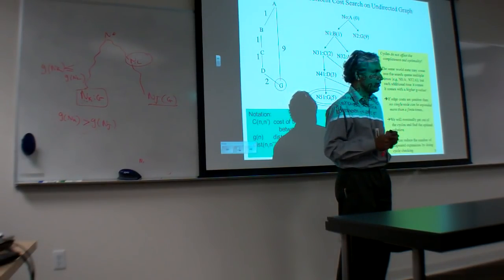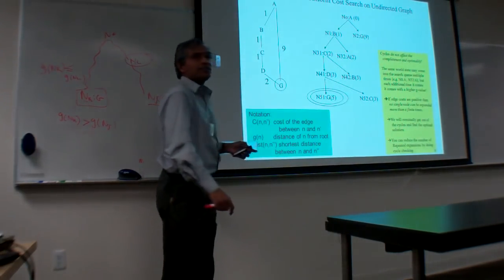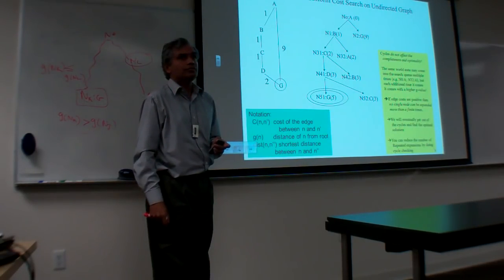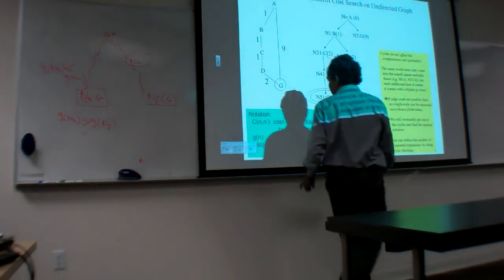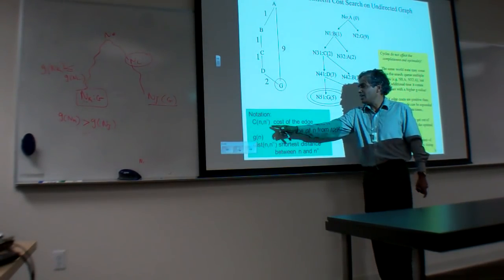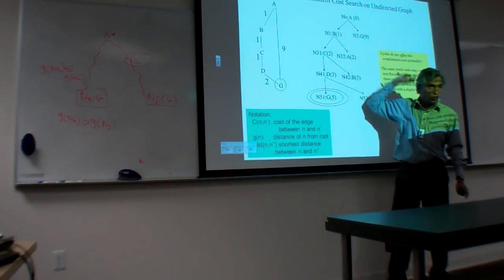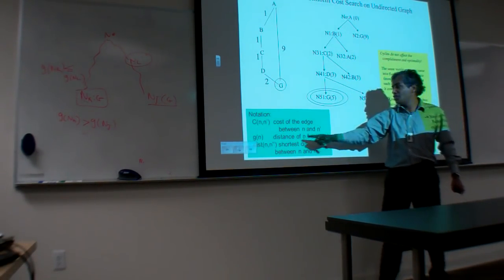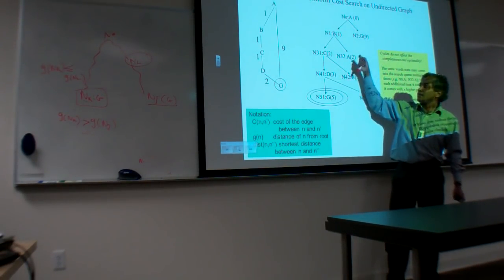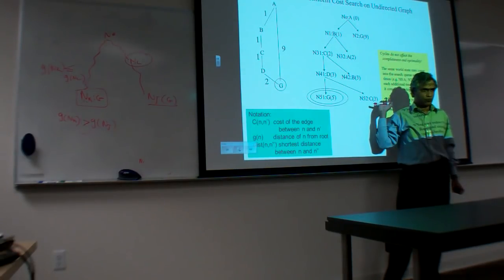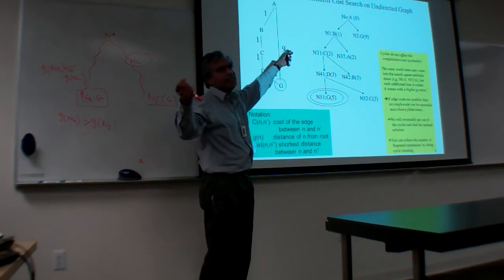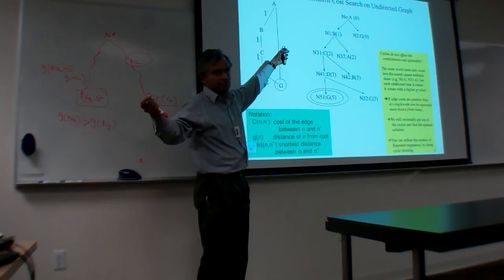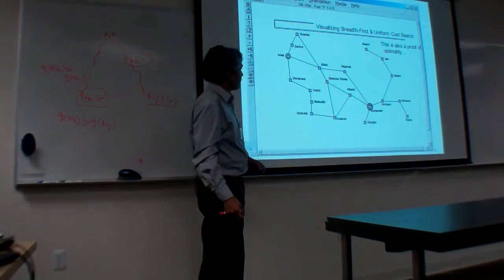Uniform cost search is over. Here's notation worth remembering: C(N, N') is the cost of the edge between nodes N and N'. G of N is the cost of coming to that node from the root node. And normally, distance refers to the shortest distance between two nodes. Another way of understanding what uniform cost search is doing — suppose this is a metric graph with roads and distances — it can be seen as searching in ever-increasing concentric circles around the start.